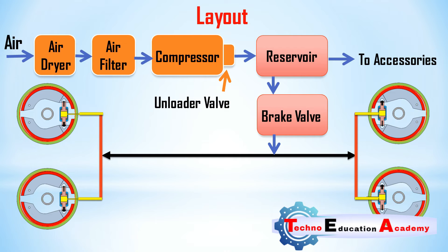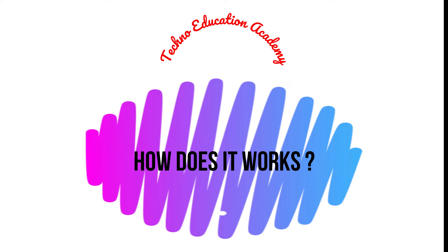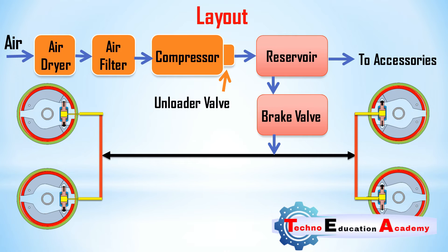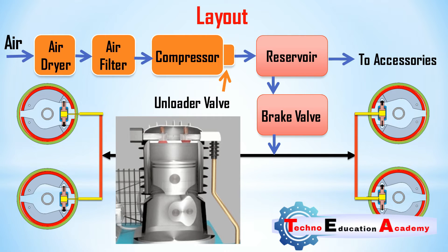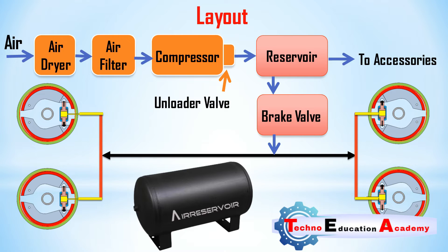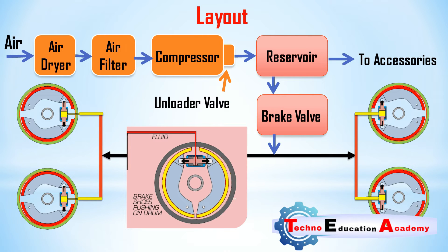Now we will discuss the working principle of the air brake system. When the driver presses the brake pedal, the following procedure takes place: when the driver starts the engine, the air compressor starts — driven by the engine — and begins compressing atmospheric air. Through the compressor governor, this compressed air at optimum pressure is sent to the air reservoir, which always has some air stored from the previous cycle. When the driver presses the brake pedal, the outlet valve of the triple valve closes and the inlet valve opens, giving passage to compressed air from the reservoir through the brake lines.